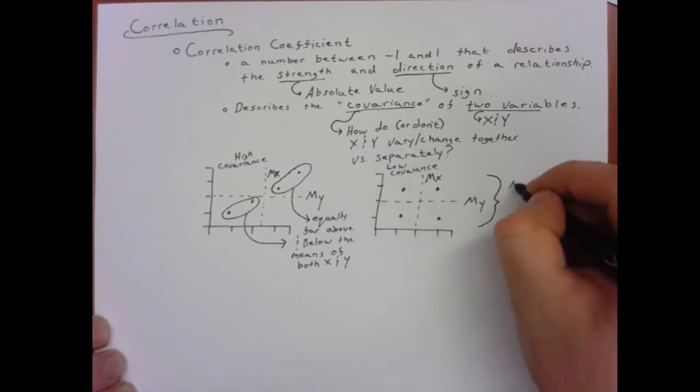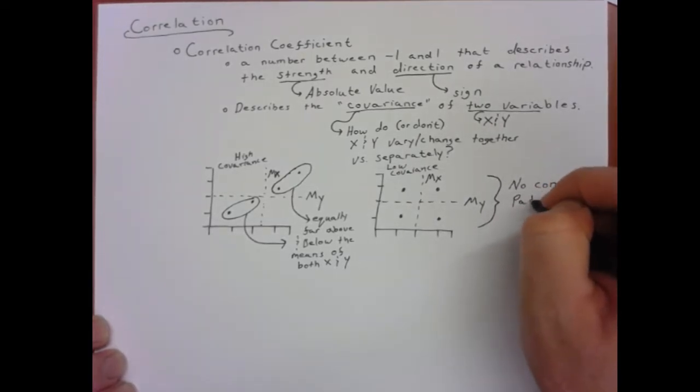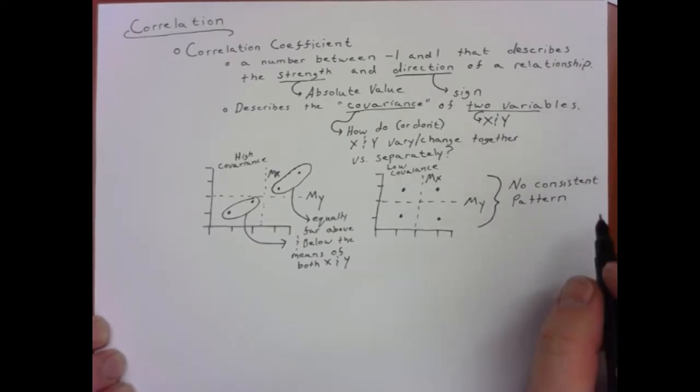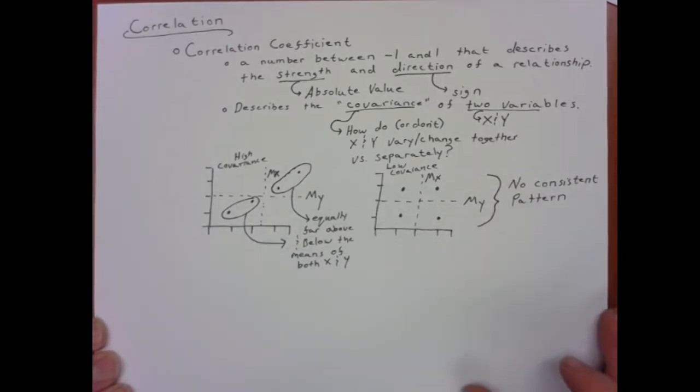When we look at the low covariance situation, there is no consistent pattern. We have a point that's above the mean of x and above the mean of y, above the mean of x and below the mean of y, and the whole gamut.